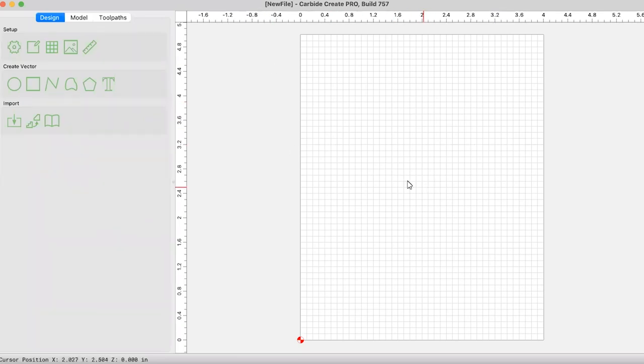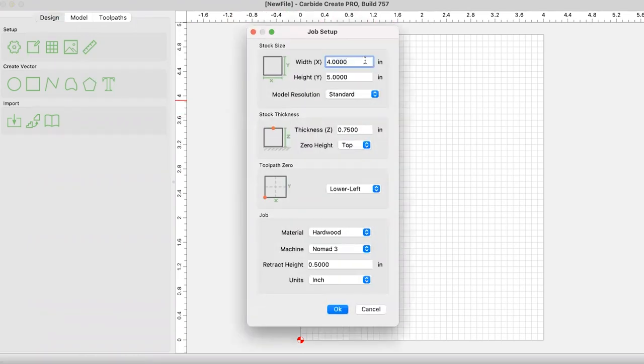The first thing that we're going to do, let me go ahead and screen share here. I'm going to pull up a fresh project in Carbide Create. So what I want to do first is we're going to go into the job setup and I'm going to set up something a little bit larger than what my wasteboard is. So I'm going to do, since these are eight inches, I'm going to do eight and a quarter by eight and a quarter.